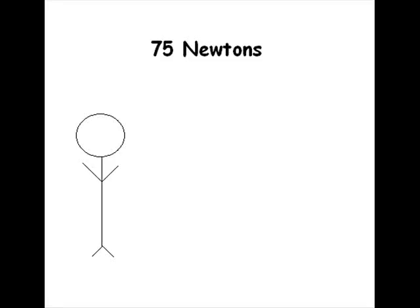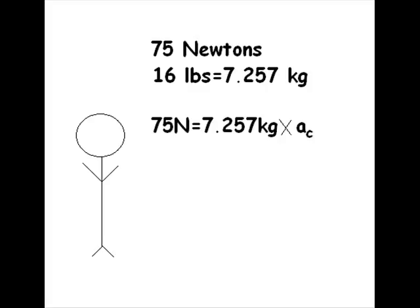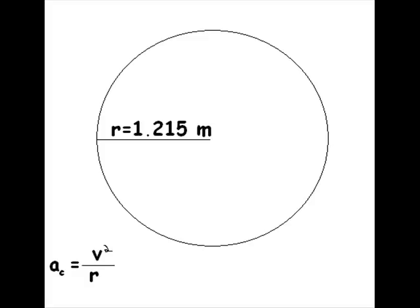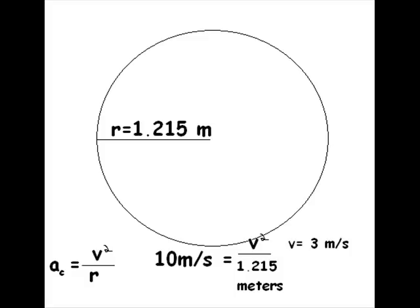Alright Billy, by using my extremely high-tech gadget, I have figured out that the current high scorer used a force of 75 Newtons. Since an average man's hammer weighs 16 pounds or roughly 7.257 kilograms, his centripetal acceleration was about 10 meters per second squared. That means that since the radius of the circle used is 121.5 centimeters or 1.215 meters, by using the formula a_c = v² / r, I can determine his velocity was roughly 3.5 meters per second. You must exert more force than that or else it is all over! No problem Helga, I've been working out.